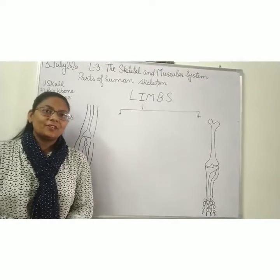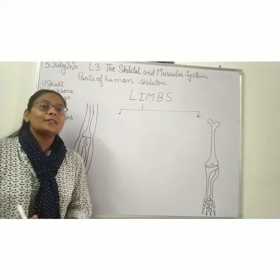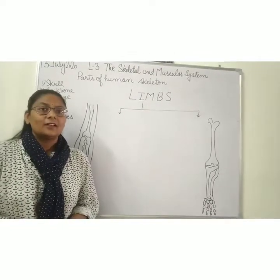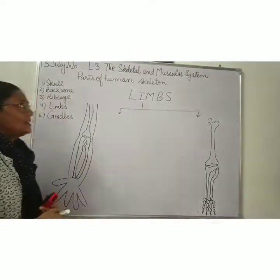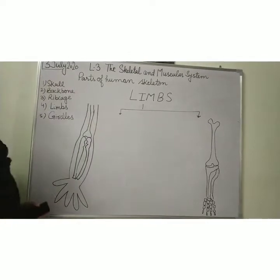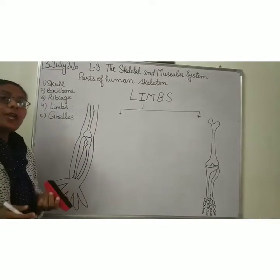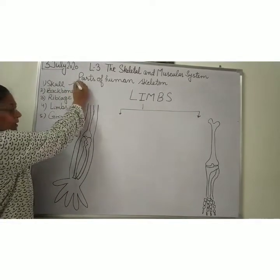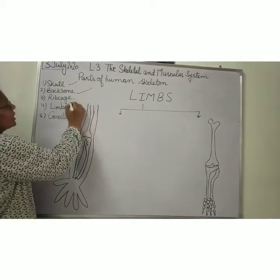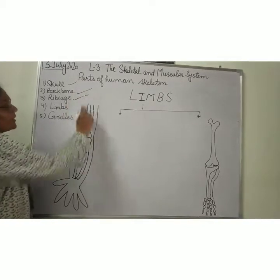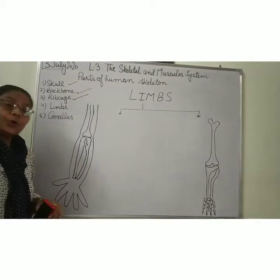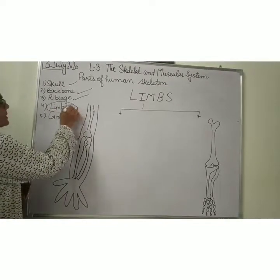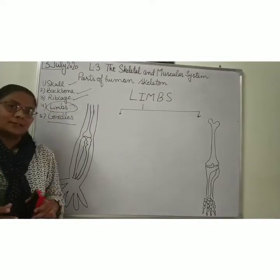Good morning children. Welcome to the series on parts of the human skeleton. Today is 13th July. Till now we have studied about the skull, backbone, and ribcage. Today we are going to study about the limbs and girdles.